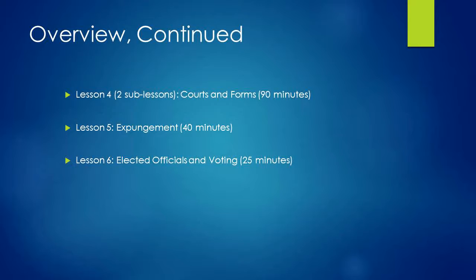Finally, in lesson six, you will be learning to search for federal and state representatives and where to find information on voting and registration. The assignment for this lesson is to look up state and local representatives for a person living right next door to your library, so this should be quick. The final lesson should take about 25 minutes.